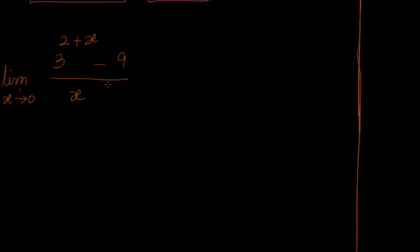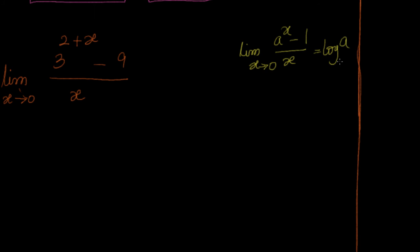Limit x tends to 0 of (3^(2+x) minus 9) divided by x. This is in the form of a^x minus 1 divided by x as x tends to 0, which we know is nothing but log of a to base e. Now a is 3, but I want the second term to be 1.